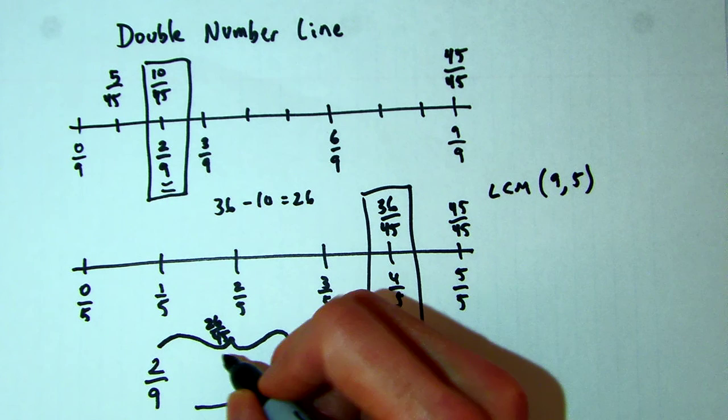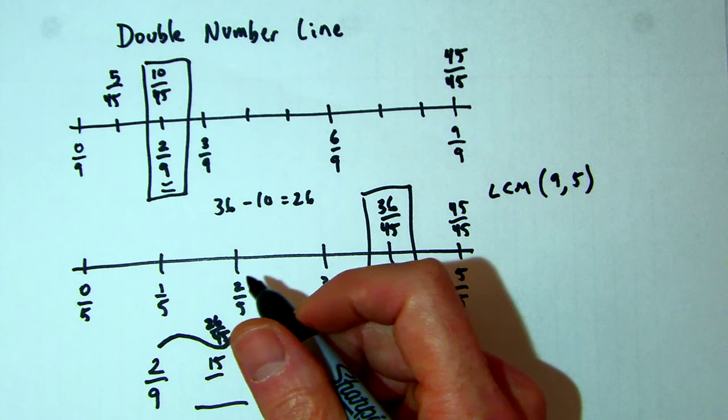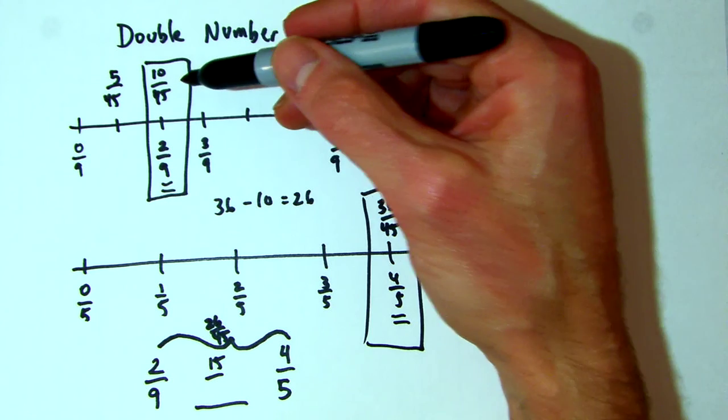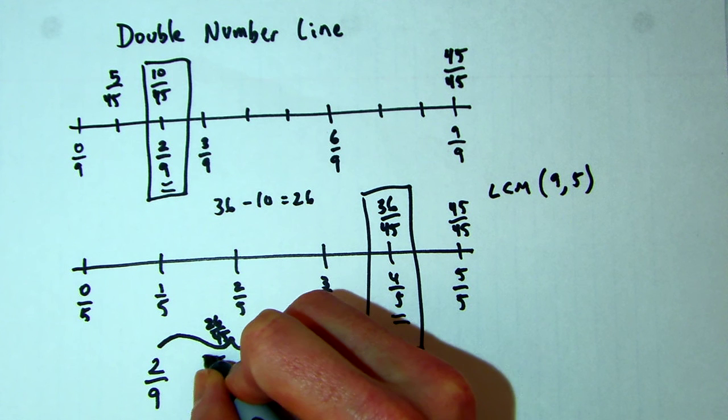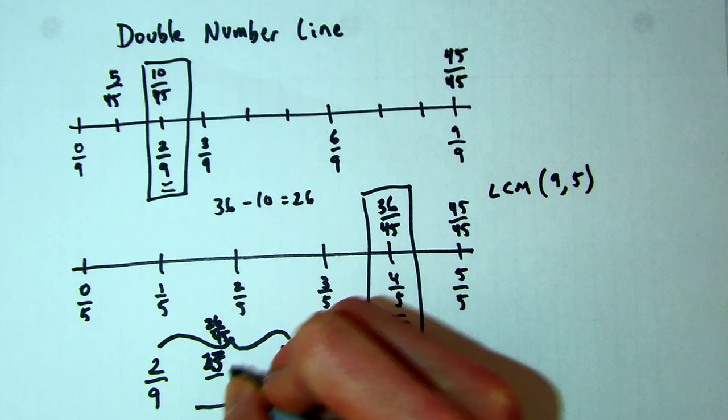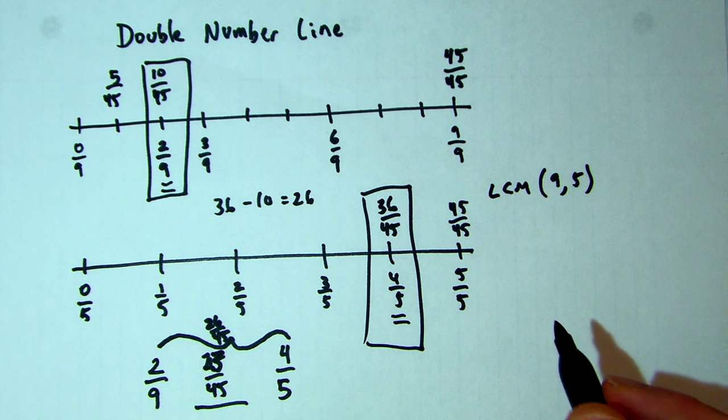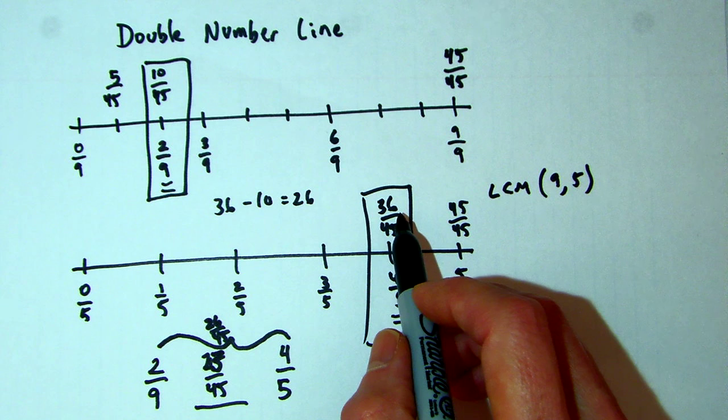We are going to have 10/45 plus 13/45. So we're going to have 23/45. So we go up 13 to get 23/45. And then we'll go up another 13 and we're at 36/45, which is this value right here.